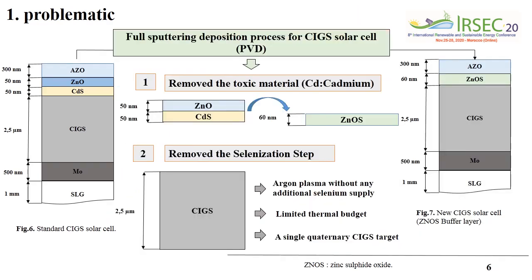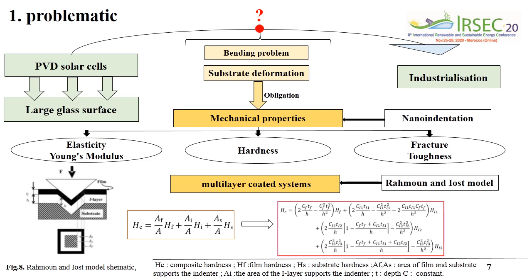For the full sputtering deposition process for CIGSe solar cells, we had to remove toxic materials — cadmium — with the integration of ZnO:S layers, and remove the selenization steps. Using argon plasma without any additional selenium supply, with a limited thermal budget and a single cadmium-free CIGSe process. During industrialization, cracking problems and substrate deformation appeared. Therefore, studying mechanical properties is a real need.